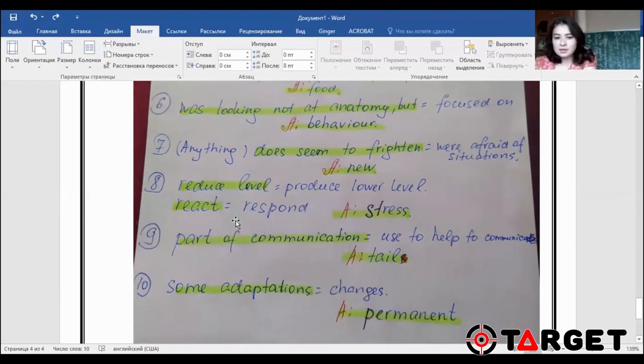Number seven, that's a mistake. Does seem to frighten was in the track and in the question it was were afraid of situations. They were afraid of situations, or they seemed to frighten off new situations that they haven't experienced yet. Number eight, reduce level was in the audio and produce lower level was in the question. React was in the audio, respond was in the question. So they respond to stress with lower levels of hormones.